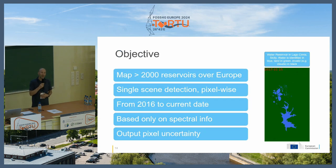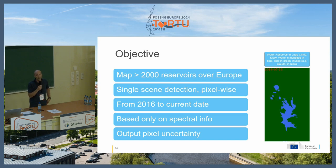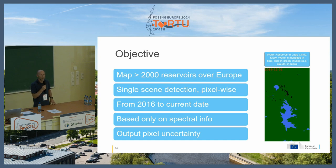The objective at this stage is not to classify all water in Europe, but we concentrated on about 2,000 reservoirs in Europe. It's single scene, pixel-based detection starting from 2016 to date, purely based on spectral information — no contextual information or time series. We also provide pixel uncertainty derived from the machine learning output.